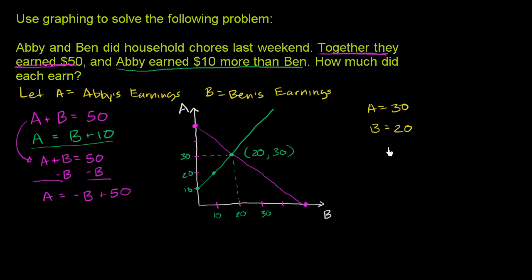Let's verify that these earnings for Abby and Ben satisfy both constraints. The first constraint is that Abby plus Ben equals $50. Well, $30 plus $20 is $50, so it meets our first constraint. The second constraint is that Abby earned $10 more than Ben. Abby is making $10 more than Ben, so it meets our second constraint. It meets both of them. So that's our solution: Abby earned $30, Ben earned $20.